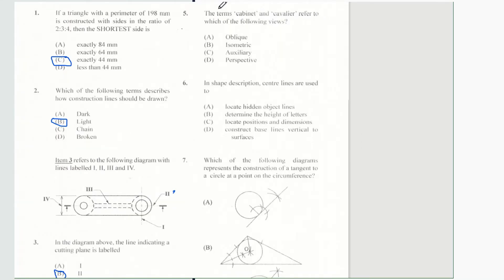Question 5 says the terms cabinet and cavalier refer to which of the following views: A oblique, B isometric, C auxiliary, or D perspective? And of course those terms are referring to A — oblique.